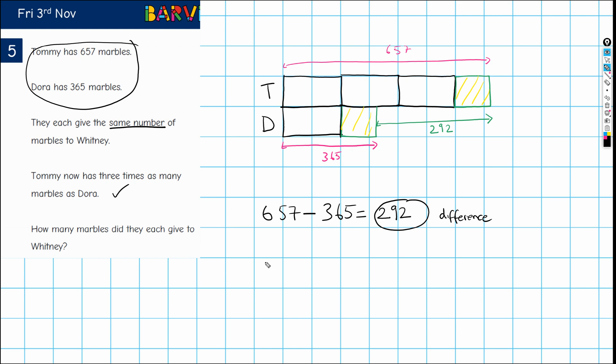Let's go again. So this is what we have for Tommy, this is what we have for Dora, and the difference, because it remains the same, is 292. Perhaps here it might be just easier to see, except that I haven't used my lovely colors.